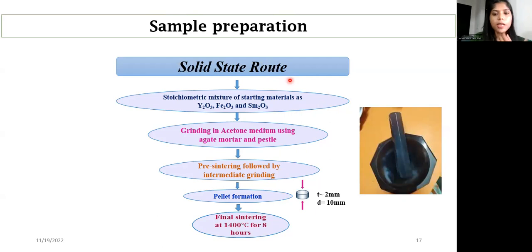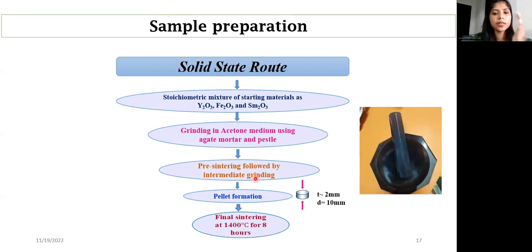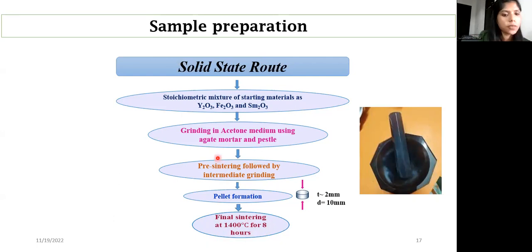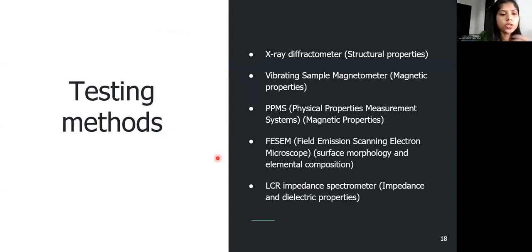I used the solid-state route method, which is simple and can be done at the laboratory level. Oxides of iron and yttrium are mixed in stoichiometric ratio to prepare Y₃Fe₅O₁₂, mixed in an acetone medium, pre-sintered at around 600°C, then the pellets are ground and re-sintered through intermediate sintering steps. Finally the sample was sintered at 1400°C for eight hours to obtain a single-phase material with no impurity.